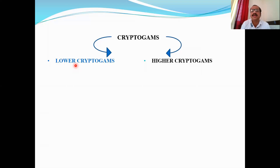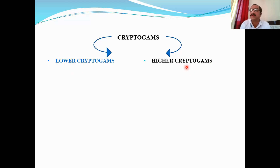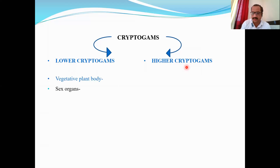Plants that developed first during evolution have more primitive characters and are called lower cryptogamae, while those with advanced or evolved characters are called higher cryptogamae. There are three important distinguishing characters: the nature of the plant body, the nature of the sex organs or reproductive organs, and the nature of the embryo.